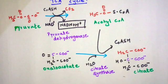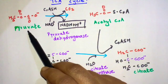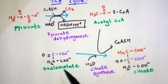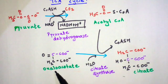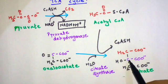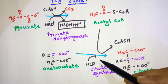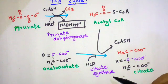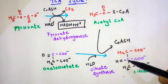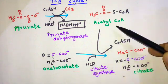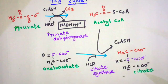Pyruvate is converted to acetyl coenzyme A, which now enters the TCA cycle. In the first step of the TCA cycle, oxaloacetate is converted to citrate by addition of acetyl coenzyme A and a water molecule. This reaction is catalyzed by citrate synthase. Note that the two carbons from acetyl coenzyme A and the rest from oxaloacetate combine to form citrate.